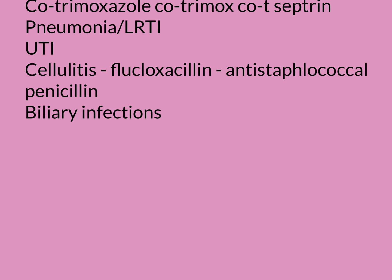Examples of anti-staphylococcal penicillins include flucloxacillin and methicillin, which is famous from its role in the name MRSA. MRSA is methicillin-resistant Staphylococcus aureus — a form of staph aureus that is resistant even to an anti-staphylococcal penicillin such as methicillin. Another example is oxacillin.